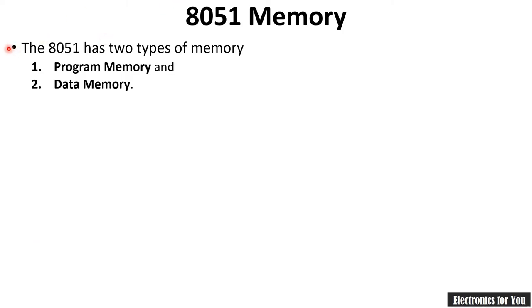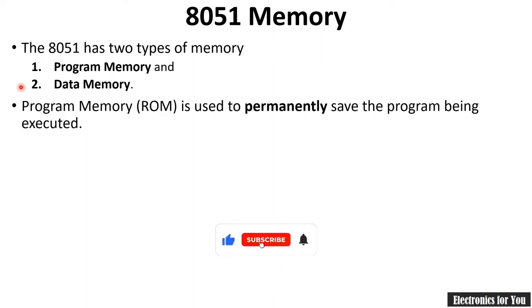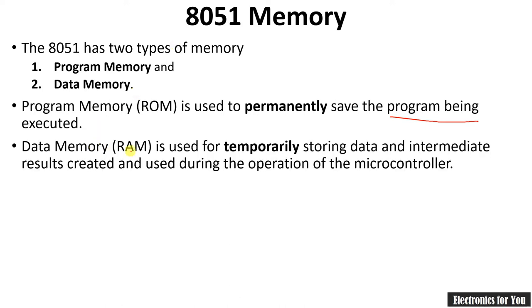The 8051 has two types of memory: program memory and data memory. Program memory is called permanent memory because it stores data permanently — generally the program being executed is stored there. Data memory, that is RAM, is actually temporary memory where intermediate results or data can be stored. This memory is used during operation of the microcontroller; for example, if we are performing an arithmetic operation it can store temporary data such as carry or any other flag.